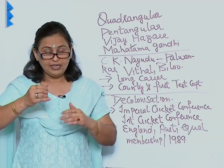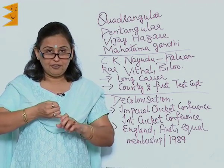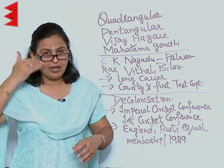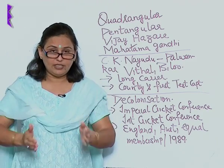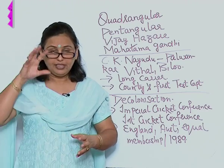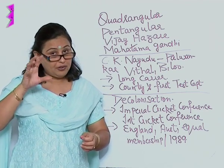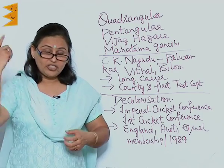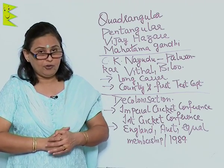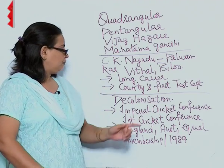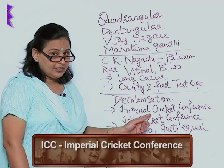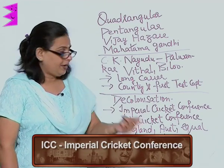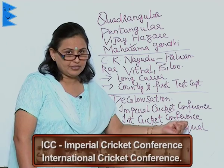Then started the process of decolonization — when the colonies began becoming independent and the influence of the British on the colonies started declining everywhere, whether militarily or trade-wise. The same was seen in cricket: British influence on cricket also started declining slowly and gradually.